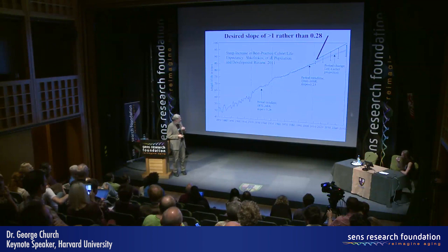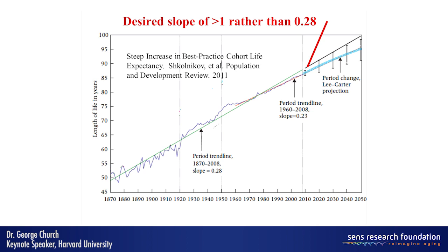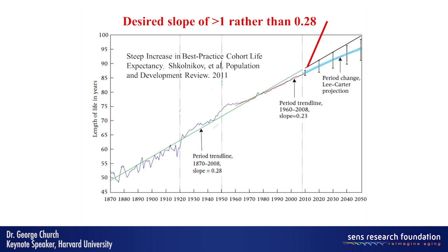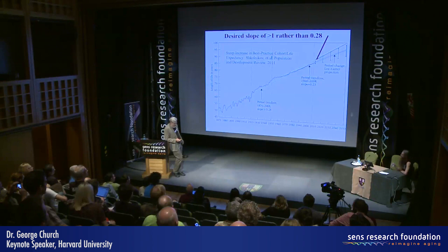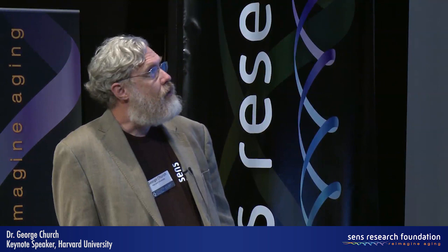We've been making progress in aging for over 150 years, roughly the time that the SENS Foundation started. But the problem is that progress is going at about a slope of 0.28, meaning that even if this keeps going at this rate, we will get older and older on average but never reach immortality. To do that, we need a slope of 1 — that red line extending from 2013. The question is how do we change that slope? I will present a number of slopes that have changed recently, in a positive way.